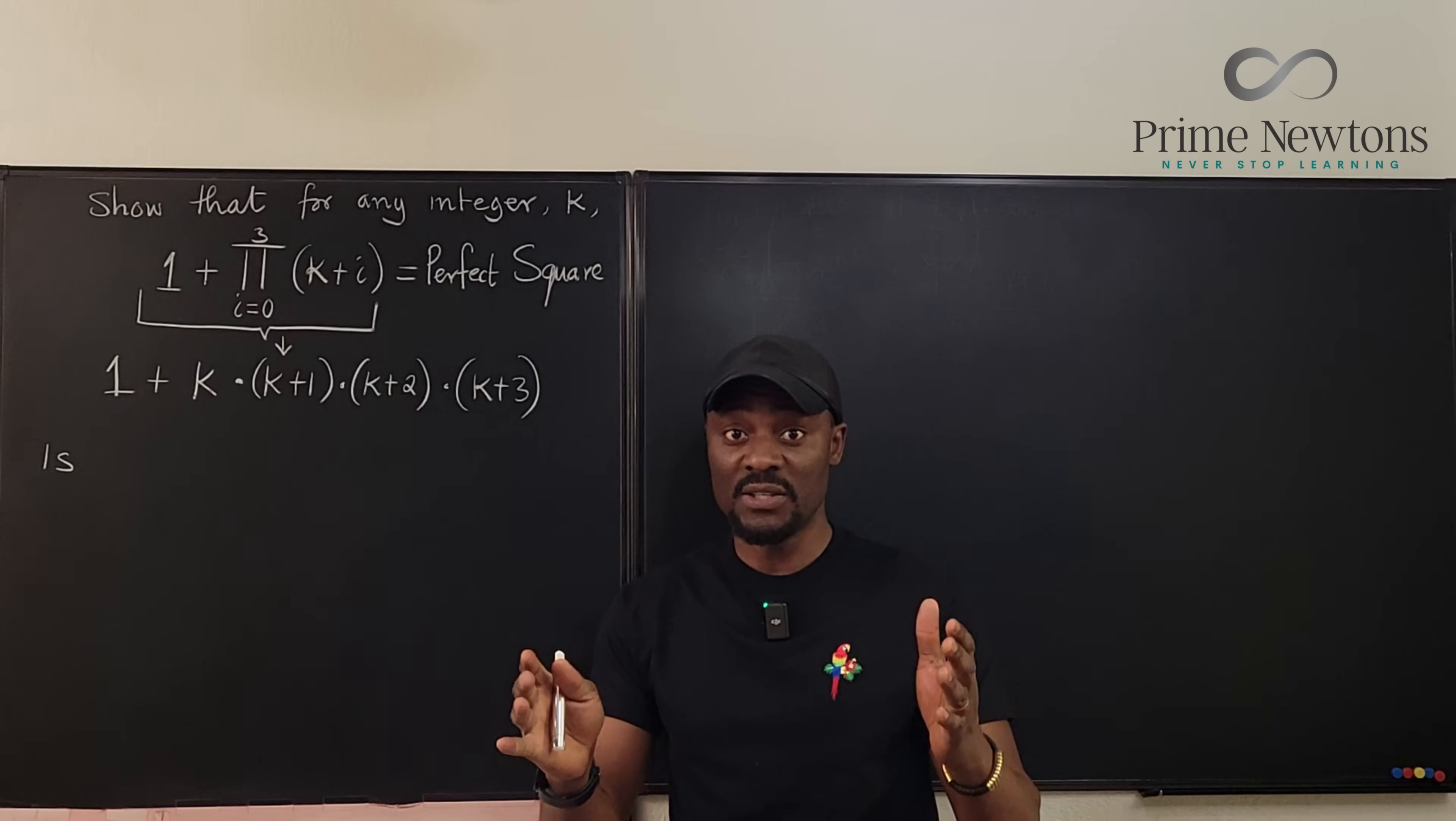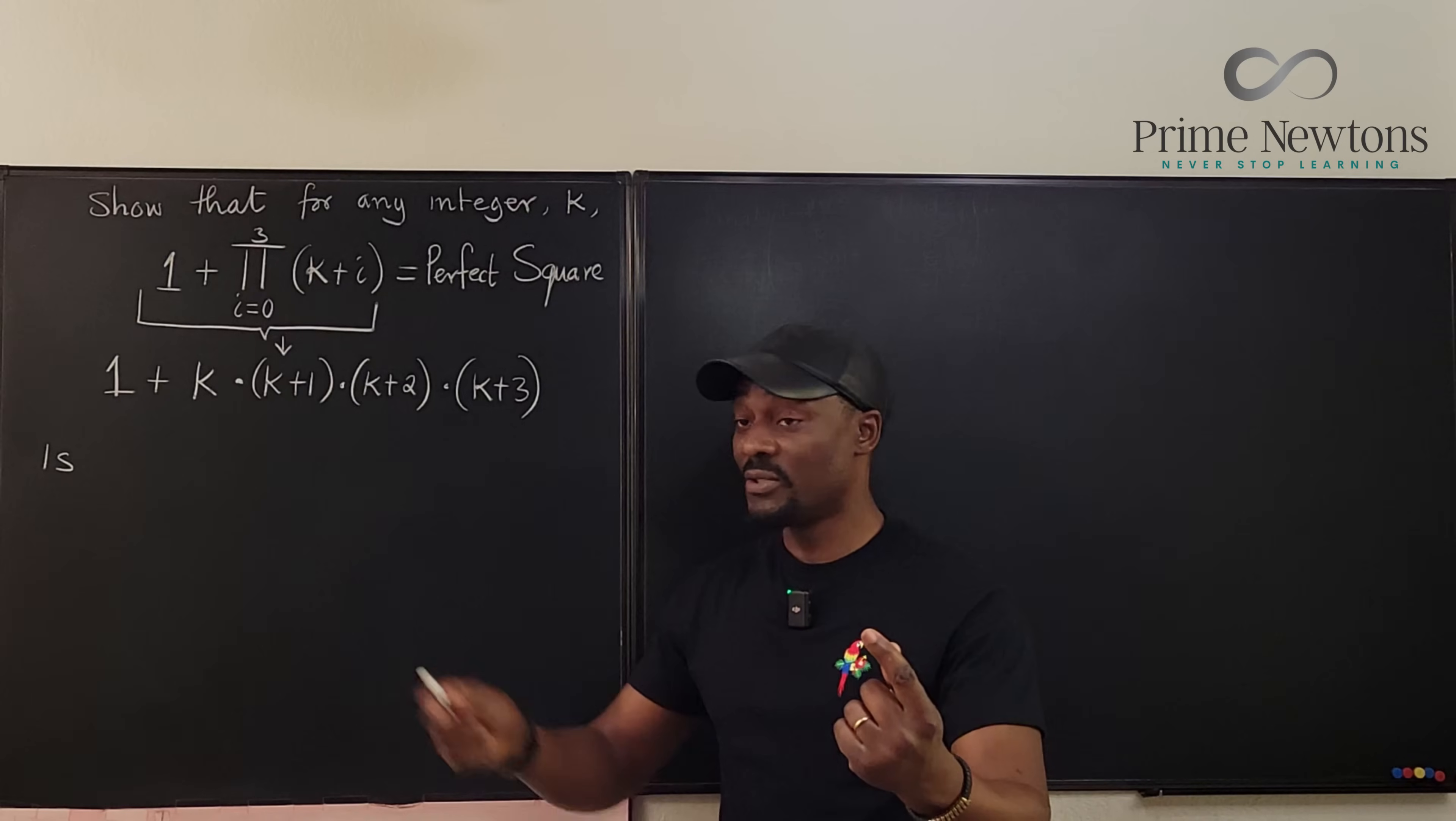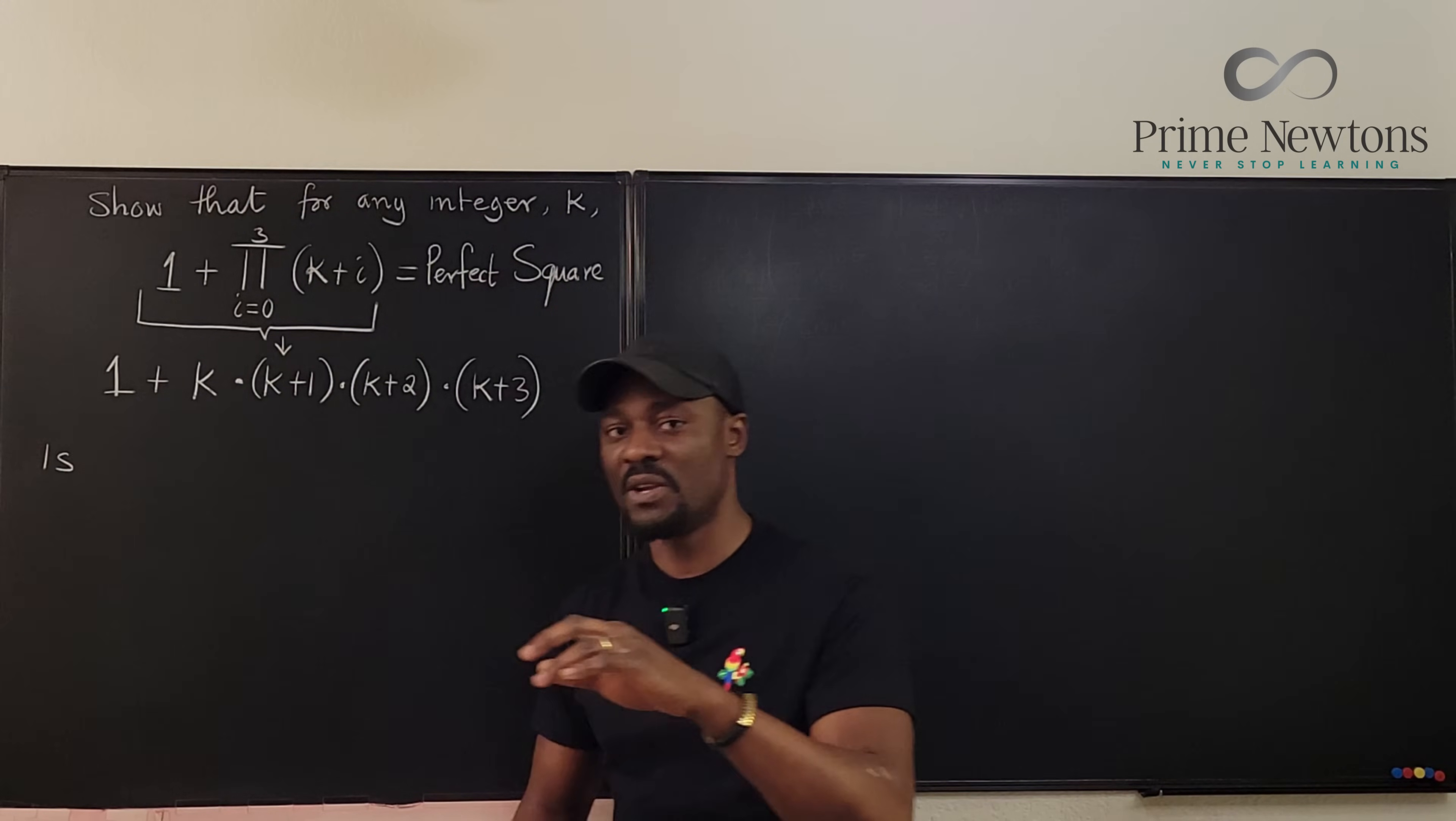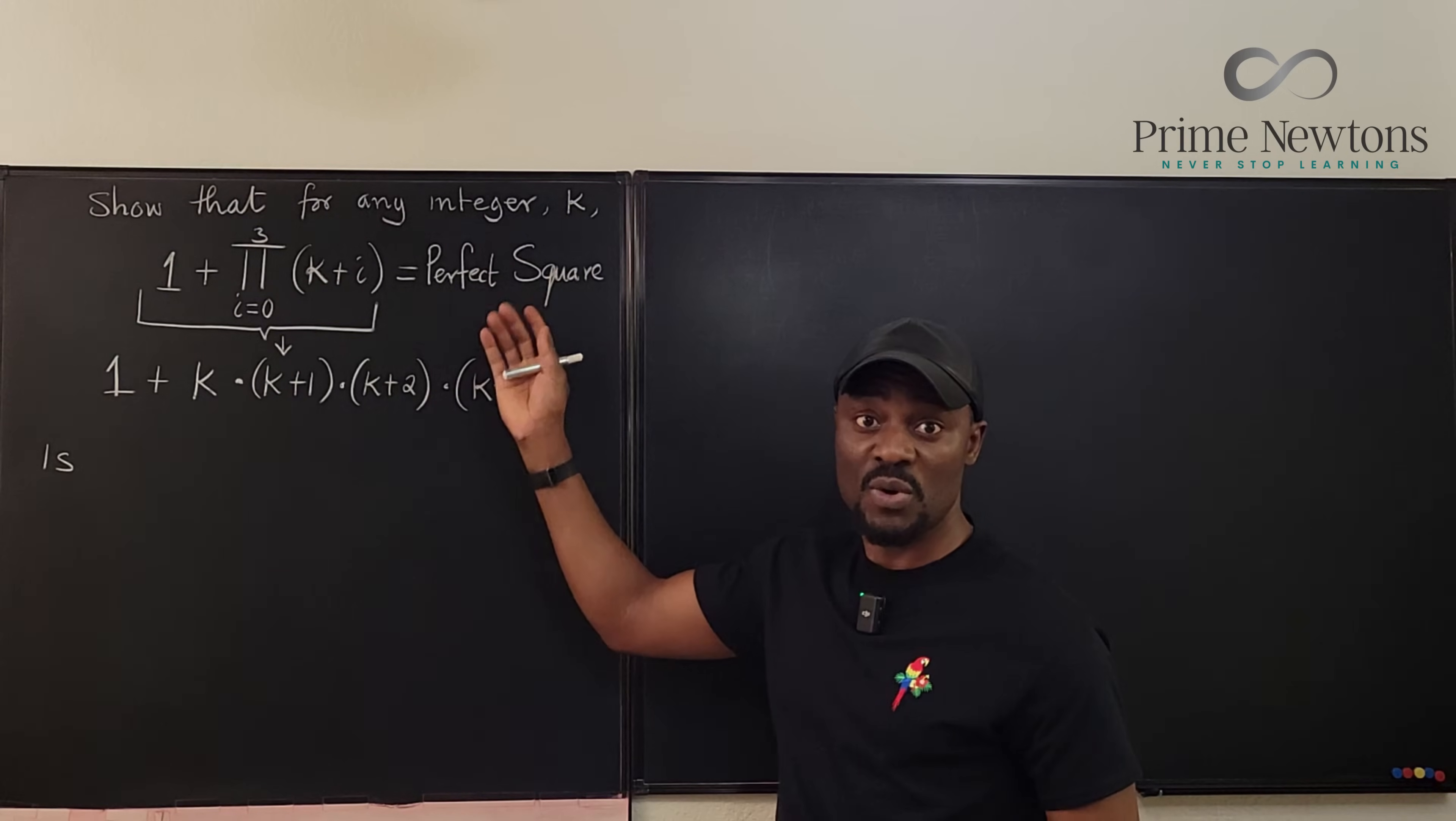You just pick any four integers. Start from minus two, minus one, zero, one. If you multiply them together, you get zero. Zero plus one is one. One is a perfect square. Go from one, two, three, four. One times two times three times four is going to be 24. 24 plus one is 25. That's a perfect square. If you pick any consecutive integers, four of them multiply, you will always get a perfect square.